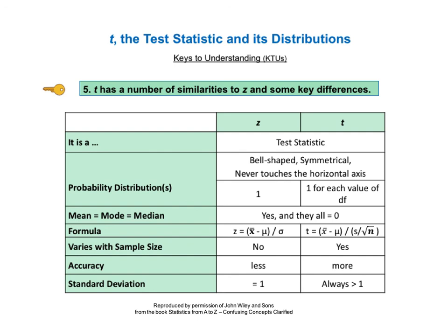More on this in the upcoming videos on t-tests. The probability distributions of both z and t are centered on 0, and z's standard normal distribution has a standard deviation of 1. The standard deviation of all t-distributions are greater than 1, with larger sample sizes bringing it closer to 1.